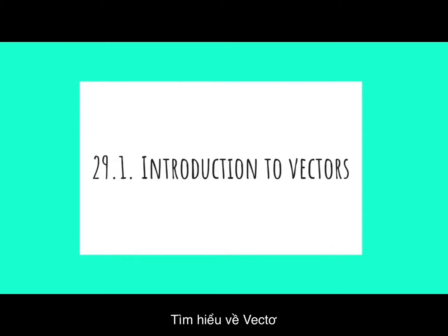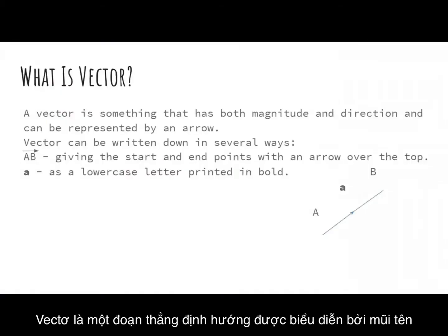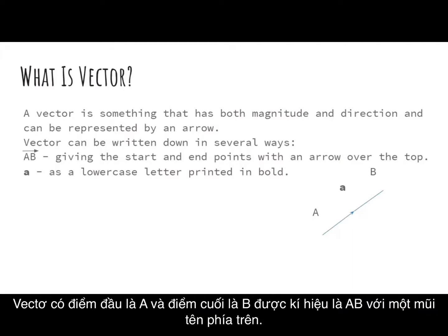Chapter 29.1: Introduction to Vectors. What is a vector? A vector is something that has both magnitude and direction and can be represented by an arrow. Vectors can be written down in several ways: A, B — giving the start and end points with an arrow over the top.